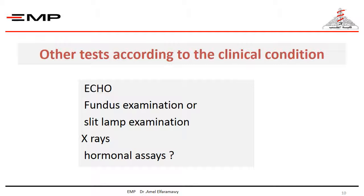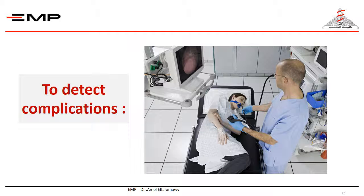Slit-lamp examination is indicated for Wilson's disease to diagnose Kayser-Fleischer rings. X-rays in Alagille syndrome for skeletal abnormalities, hormonal assay for endocrinal causes of cholestasis, and so on. You may also need to do upper GI endoscopy for esophageal varices due to portal hypertension, which is the end result of biliary cirrhosis secondary to long-standing cholestasis.